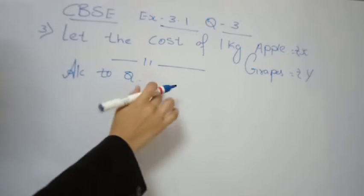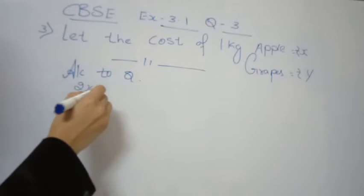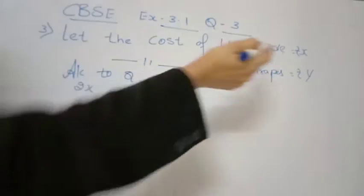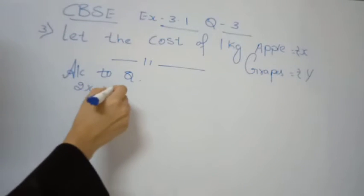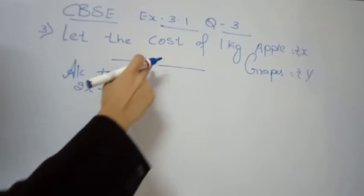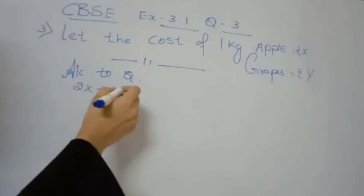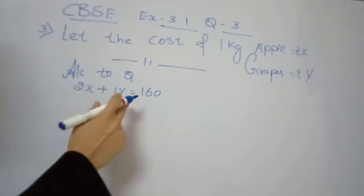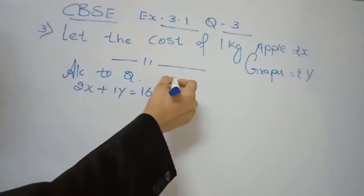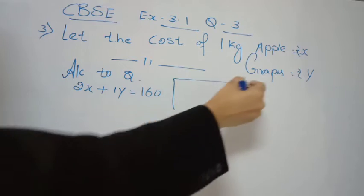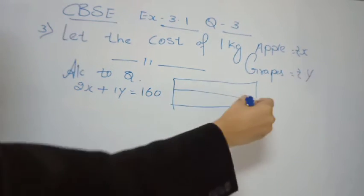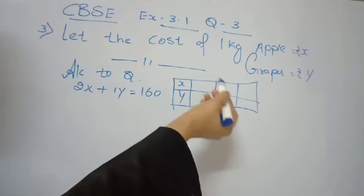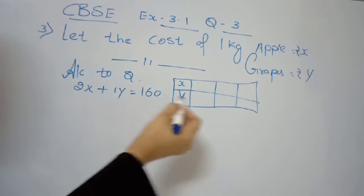We have 2 kg of apple and 1 kg of grapes equal to 160 rupees. So 2 kg of apple is 2x, and 1 kg of grapes is y. Therefore, 2x plus y is equal to 160 rupees. This is our first equation. Now we have to make the table to represent it geometrically.